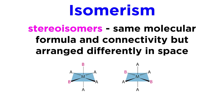Next, we have stereoisomerism. Stereoisomers are molecules with the same molecular formula and the same connectivity, but they differ in the way the atoms or groups are arranged in space.